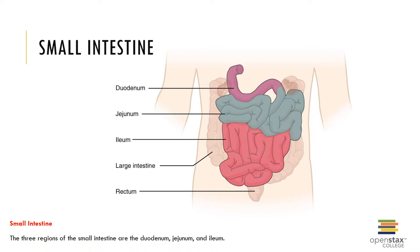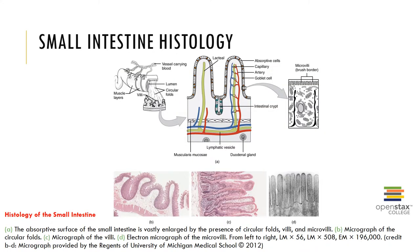Mesenteries are connective tissue extensions of the serosa that anchor the small intestine and hold the intestines in a tight mass. The microscopic anatomy of the small intestine includes intestinal villi, which are finger-like projections over the plicae circularis that greatly increase surface area. Microvilli are tiny projections of the plasma membrane of each simple columnar cell, creating a fuzzy appearance called brush border cells. Mucus cells secrete mucins onto the intestinal surface. Peyer's patches are aggregated masses of lymphoid tissue with large numbers of lymphocytes.